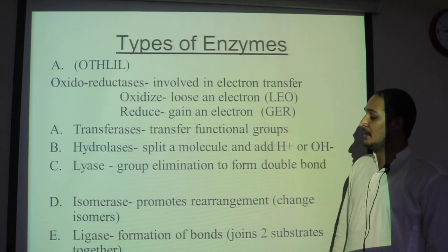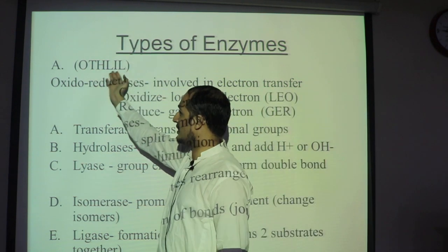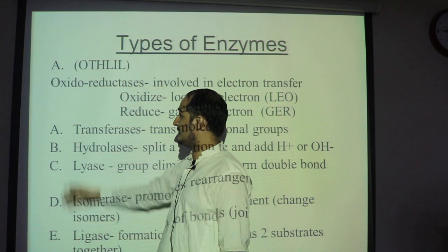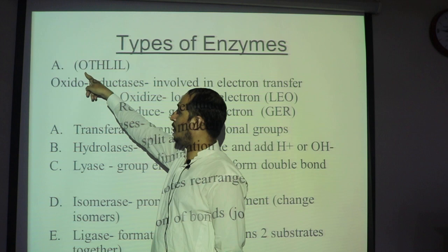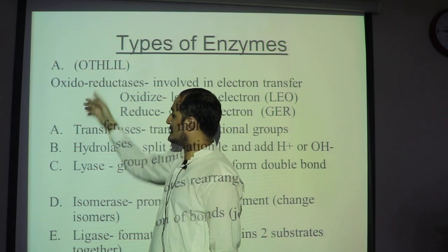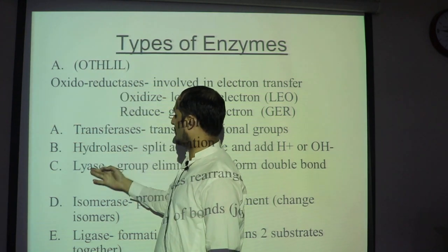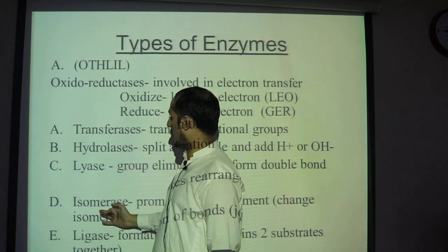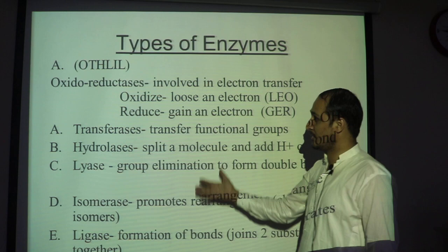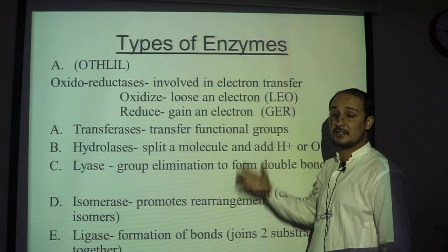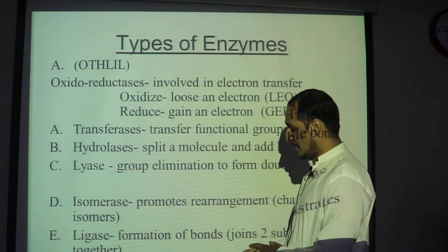There are six types of enzymes. A shortcut mnemonic to remember them is 'OTH LIL': O stands for oxidoreductase, T for transferase, H for hydrolase, L for lyase, I for isomerase, and L for ligase. Each of these has further sub-types.